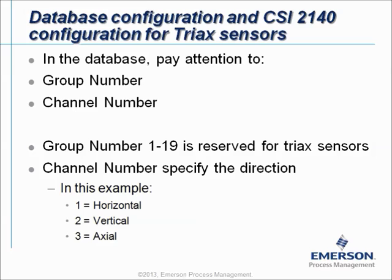If you configure the database to work with the Triax sensor, you have to pay attention to two special things. All the measurement points that are in the same measurement plane have to receive the same group number. The channel number will specify the direction of measurement. Group numbers 1 through 19 are reserved for Triax sensors. The channel numbers specify the direction — in this example, 1 is horizontal, 2 is vertical, and 3 is axial.